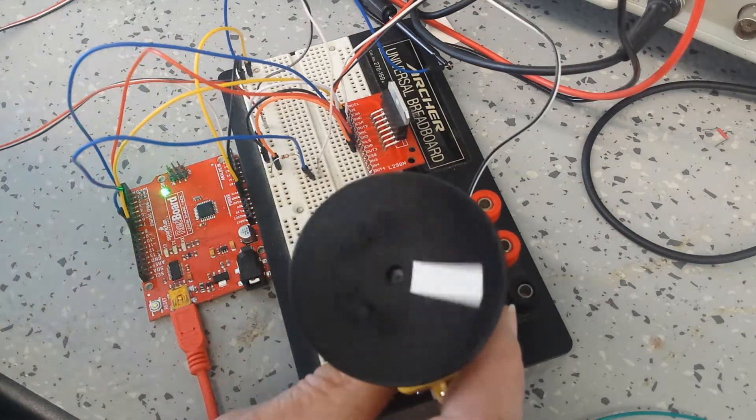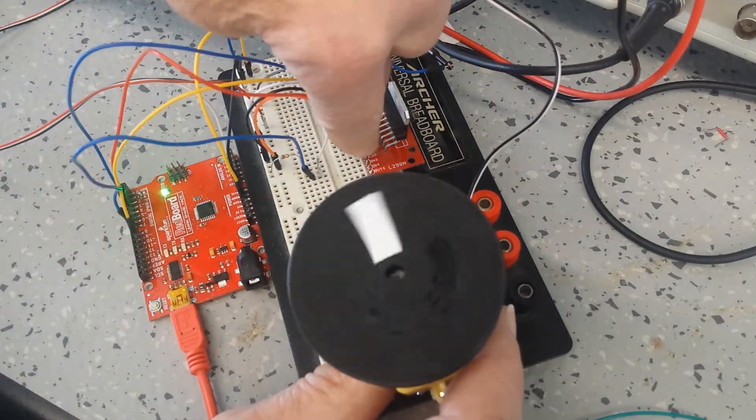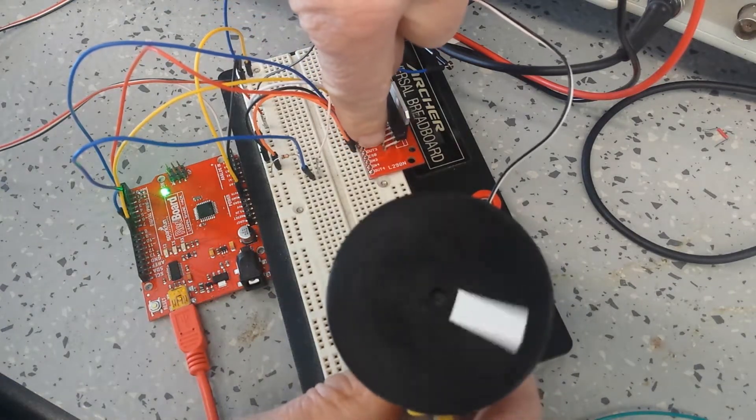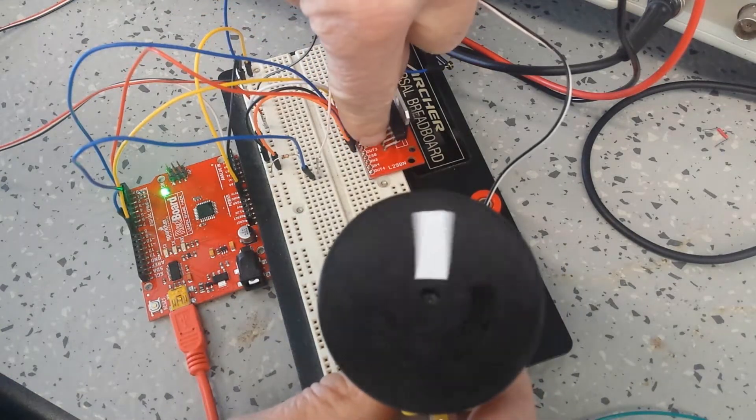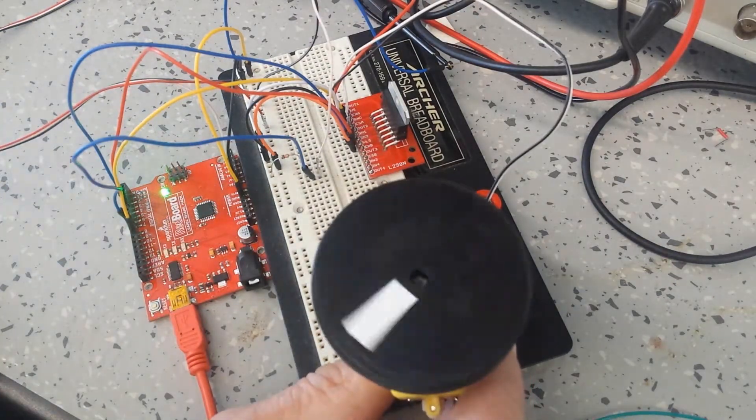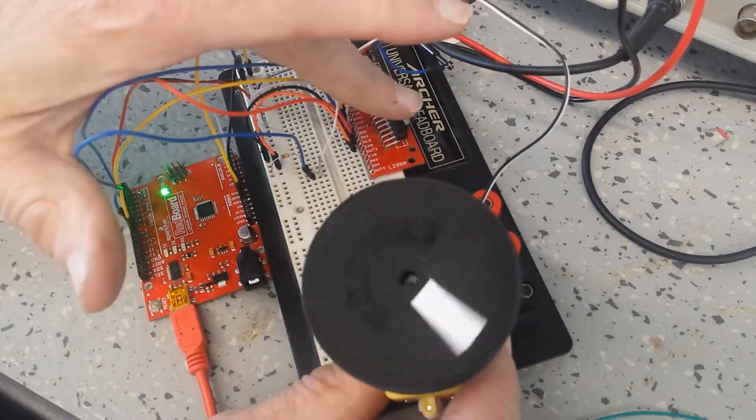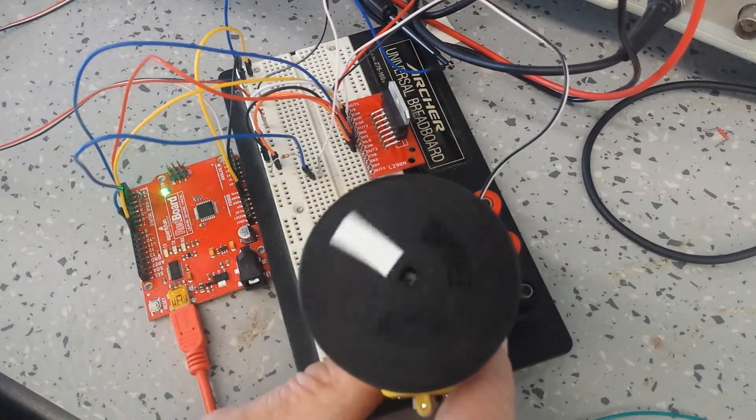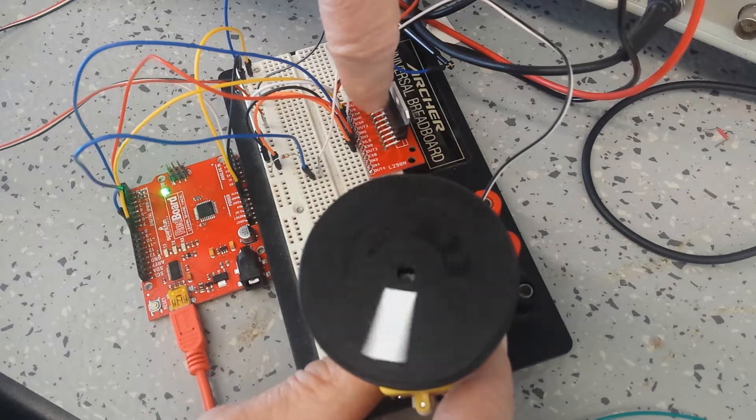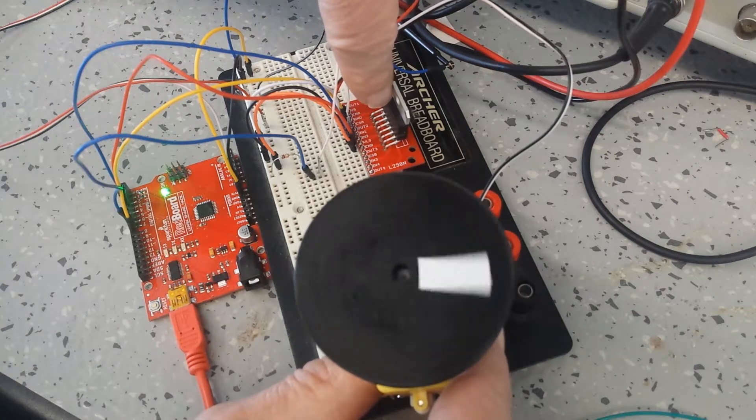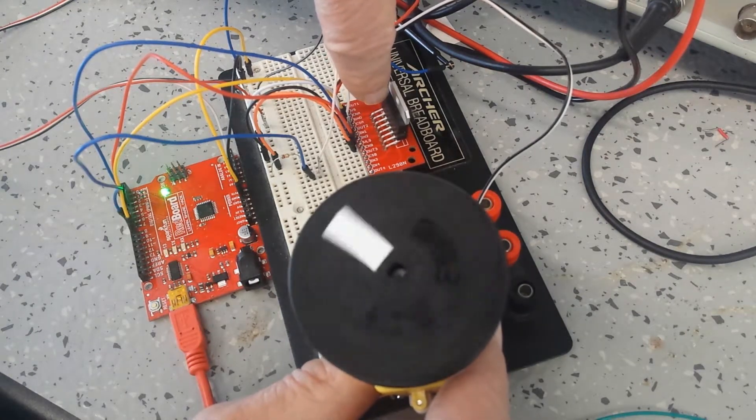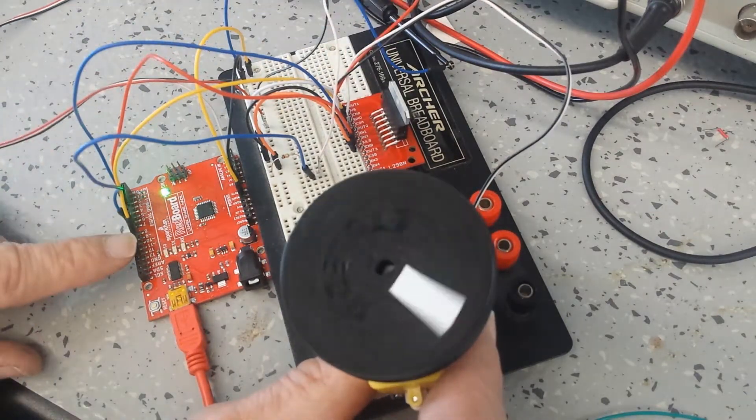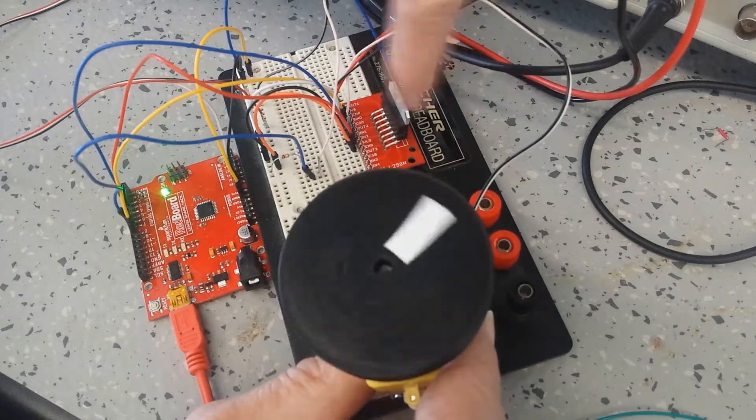Okay. And if I had a second motor, I would connect it to all of these, use the enable B, inputs three and four, output three and four. And I can control two motors, which in our line following robot, that's what we're going to do. We'll have one motor connected to this half of the L298N. And we'll have the other motor connected to this half. So we'll have two duty cycle outputs, two sets of directions.